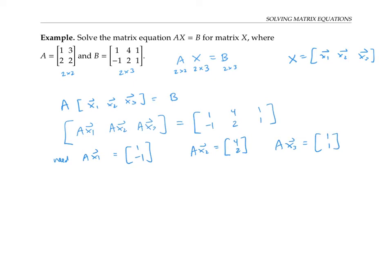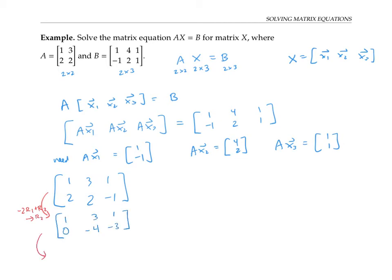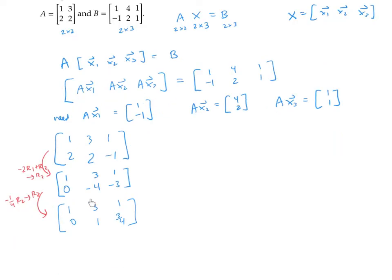We've seen how to solve these problems — this is solving a vector equation, where a matrix times a vector is another vector. So all we have to do to solve the first problem is to augment A with the column vector [1, -1] and put it in reduced row echelon form to read off our solution. I can first leave the first row alone since it already has a one in the upper left position. I get rid of the two by replacing the second row with negative two times the first row plus the second row, then divide the second row by negative four. Finally, get rid of the three by replacing the first row with the first row minus three times the second row. The solution vector x1 is the column vector [-5/4, 3/4].